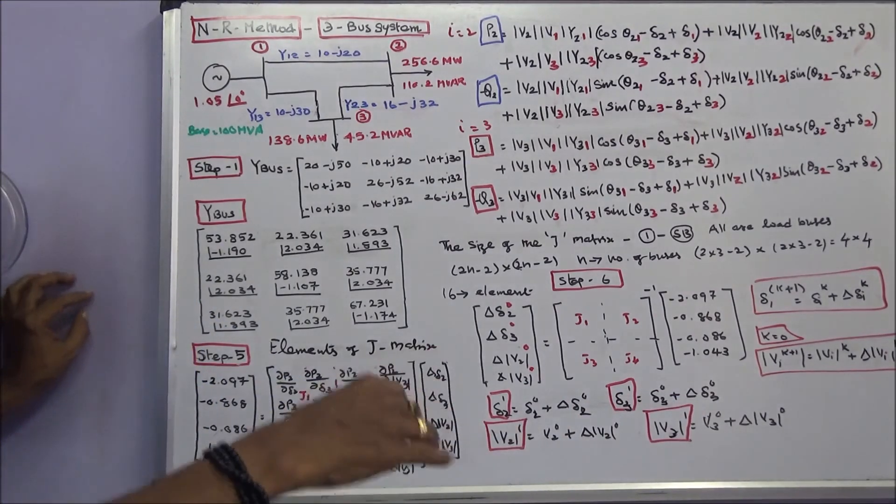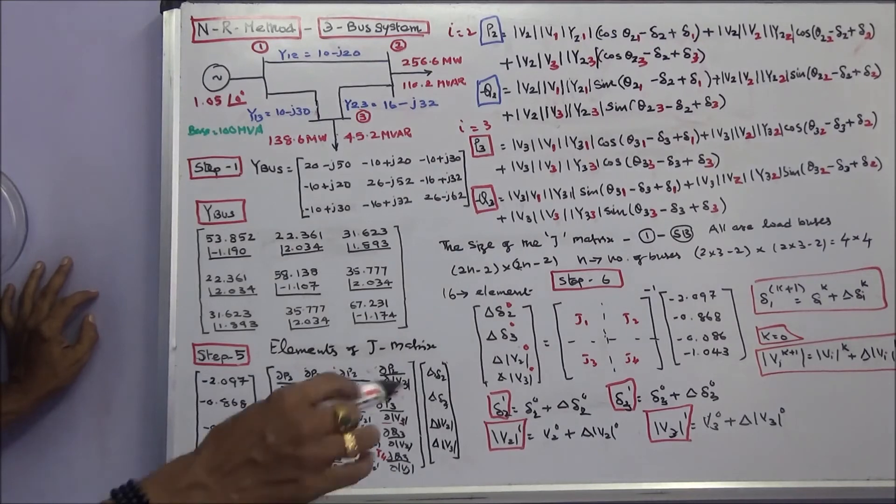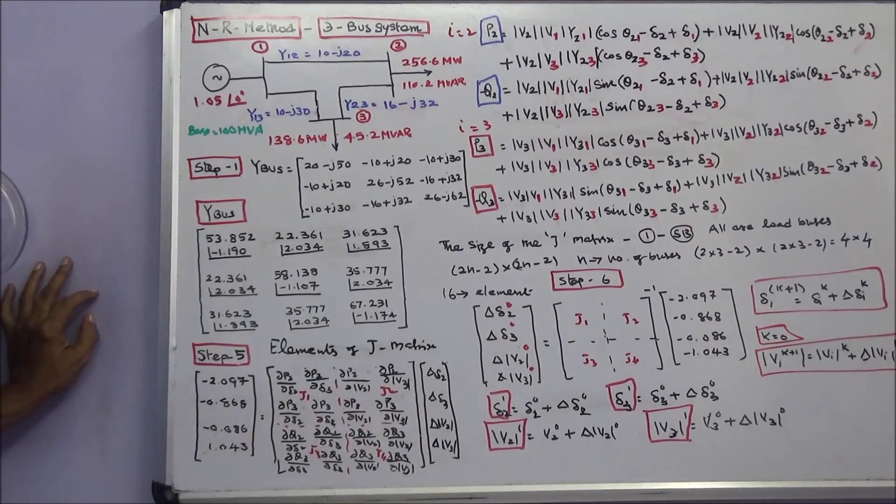This way, that will be the next iteration value. In that way, we have to proceed the problem till the convergence is obtained.